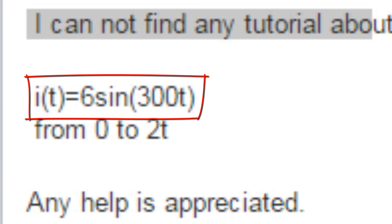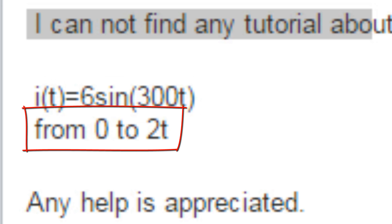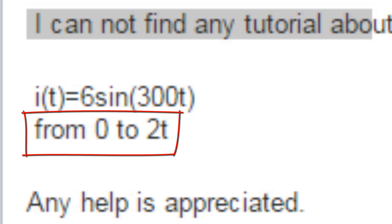i of t, a current, is a function of time and is equal to 6 times the sine of 300t. Integrate that from 0 to 2 seconds. Any help is appreciated.